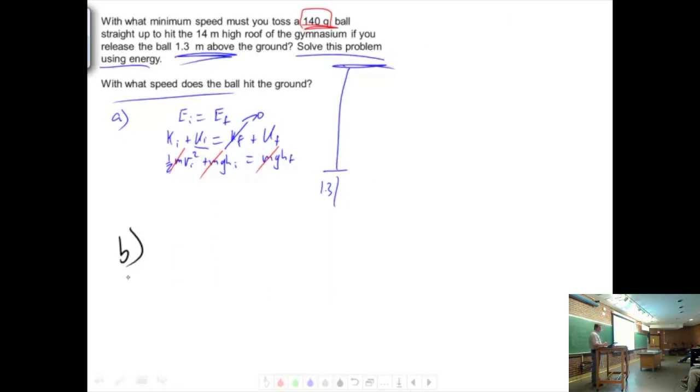What about b? What speed does it hit the ground? What could we use there? We could go back to chapter one, solve the problem, right? We know the height. We could use that. Or we could use energy again. Energy initial equals energy final. What's the initial energy state in part b?